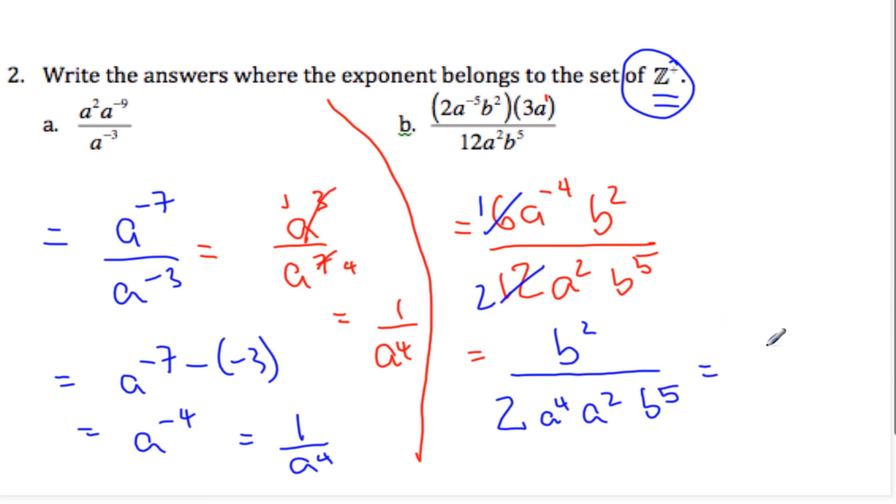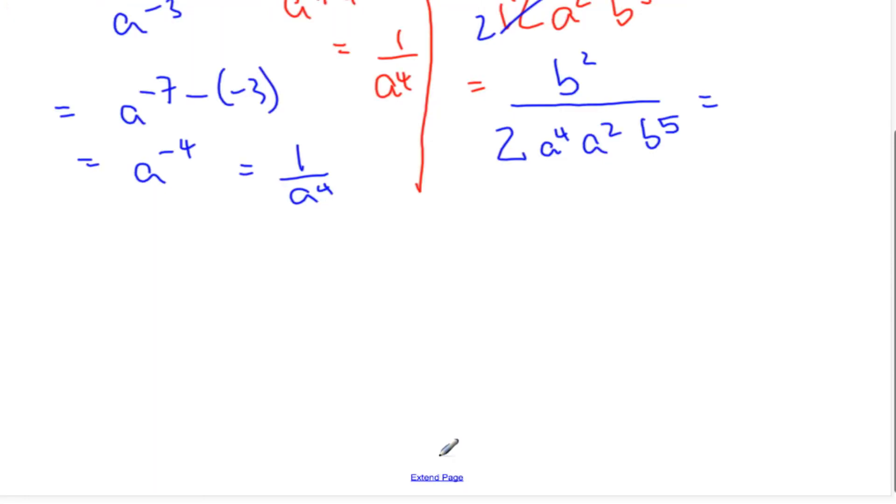Now I can simplify these things here. I know I can say, let me get some space. I can say, B squared over to add my exponents, A to the 6th, B to the 5th. These will cancel. Subtract those. I end up with 3. So there's a 1 up top, 2, A to the 6th, B cubed.